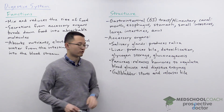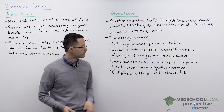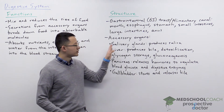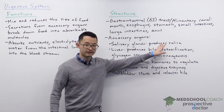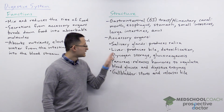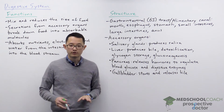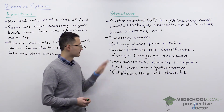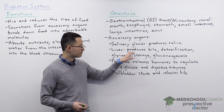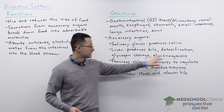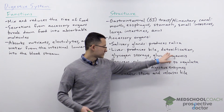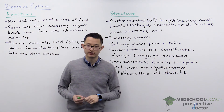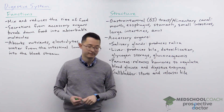The accessory organs include the salivary glands, which produce saliva, and the liver, which has multiple functions including the production of bile, detoxification, glycogen storage, and gluconeogenesis.